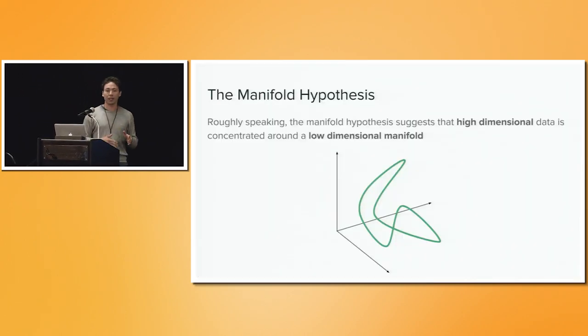I want to start this talk by stating the manifold hypothesis, which most of you might be aware of, which roughly speaking means that our observed high-dimensional data actually is generated by a lower-dimensional manifold. Much of deep learning is actually concerned with trying to find and recover this manifold.